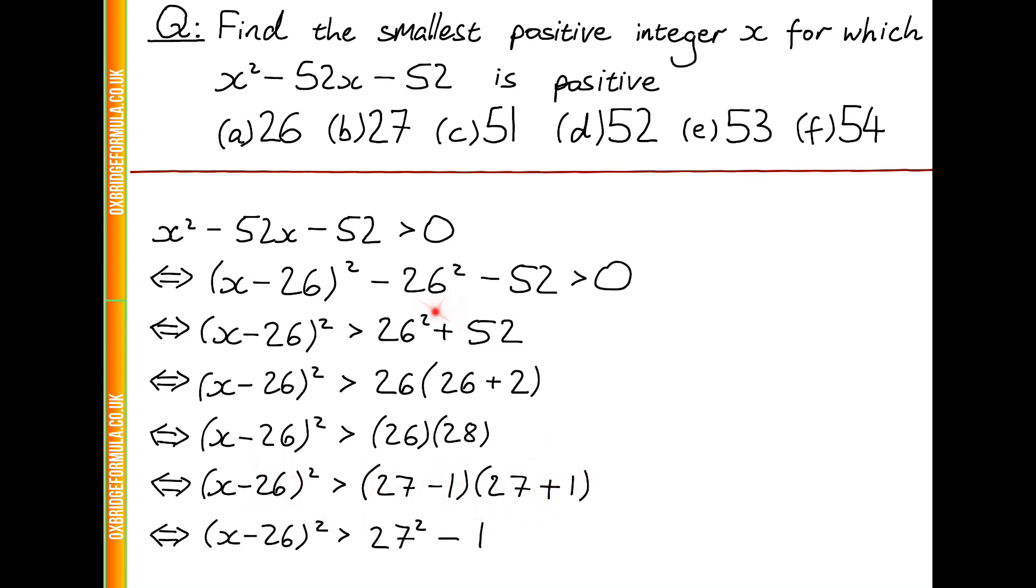So we want to find the smallest positive integer x, for which x minus 26 all squared is strictly greater than 27 squared minus 1.